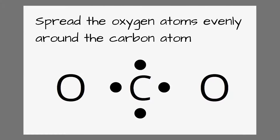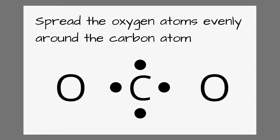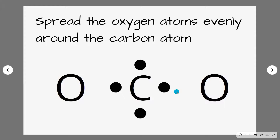The next thing we need to do is spread the other atoms around our central atom. When we place our outer atoms around the central atom we always want to place them next to a single electron on that central atom. In this case all four of carbon's electrons are single, so we could place these oxygens anywhere — we're just going to spread the atoms evenly around that central carbon atom.